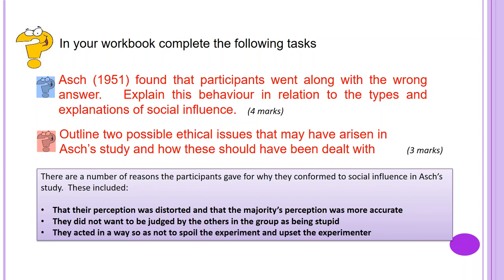Hopefully your answer will be something like this. In order to not look stupid or be embarrassed, the naive participant looked to others in the group for information and guidance. This is known as informational social influence, with 37% giving the wrong answer. However, in the absence of the confederates, only 0.7% gave a wrong answer, so there was clearly a right answer. The naive participant went along with the majority, but internalization has not taken place, as privately they still have doubts about the right answer. This type of social influence is known as compliance.